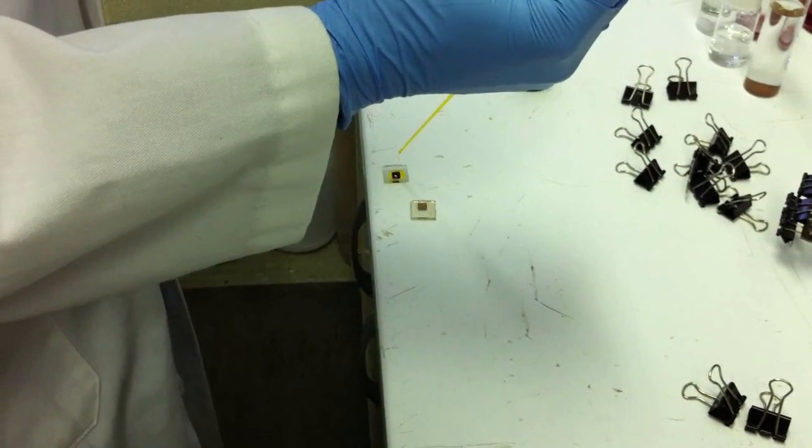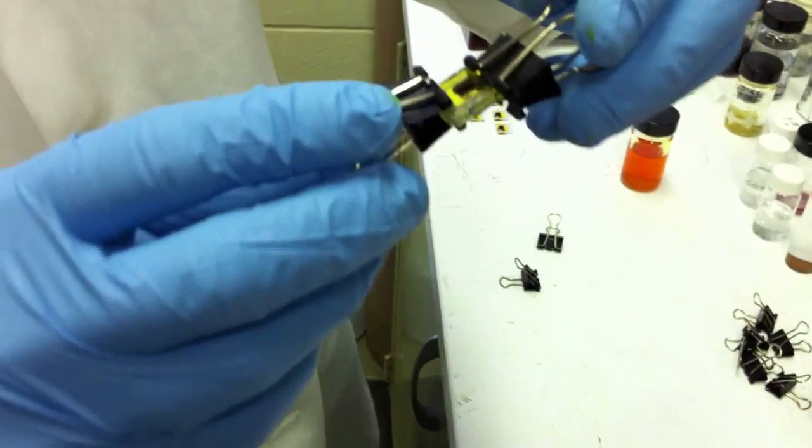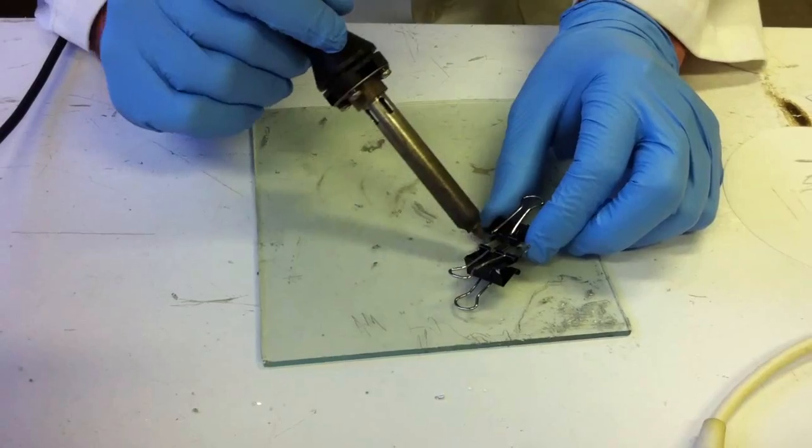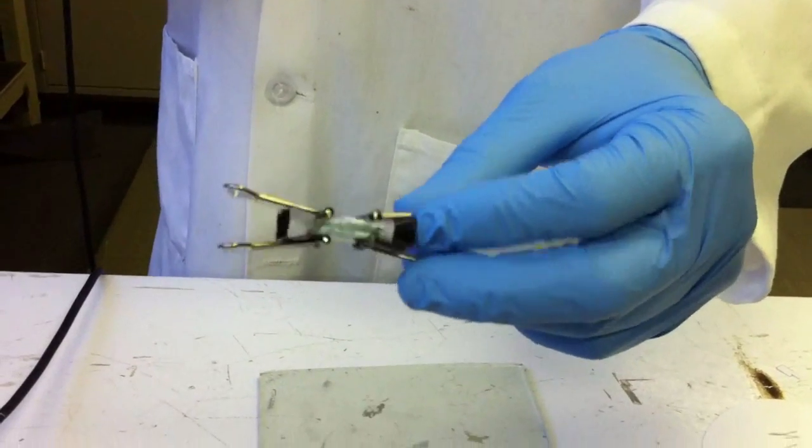First, several drops of electrolyte are placed on the counter electrode. Then the cell is sandwiched and held together using binder clips. The final step is to solder indium contacts on the working and counter electrodes.